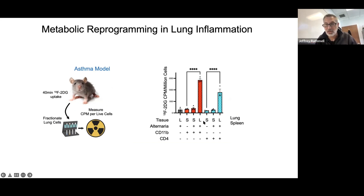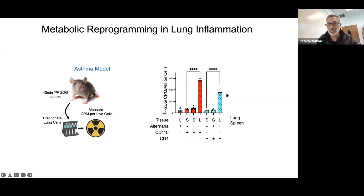The problem with bulk PET assays is you don't know what's happening at a cell level. So we've used models like an alternaria-induced asthma model, given FDG, and then fractionated the lungs into different cell fractions to see which cells take up the radioactivity. In the inflammatory model, non-immune cells in the lungs are not really taking up glucose, but the CD11b myeloid cells and T-cells in the asthmatic mice show dramatically increased glucose uptake — these immune cells become very glucose-avid.